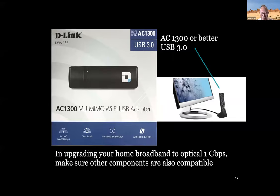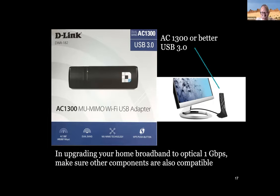A point of reminder: if you have a desktop at home and upgrade your broadband to 1GP but are still using an old external wireless adapter, you are not utilizing the full capacity. My suggestion is to get an AC 1300 wireless adapter to communicate with the router — unless your desktop has a physical data cable. Make sure your adapter is compatible with the speed you have paid for.